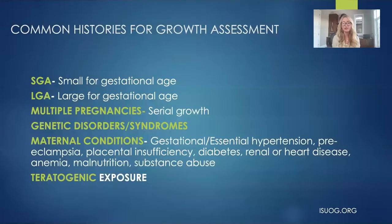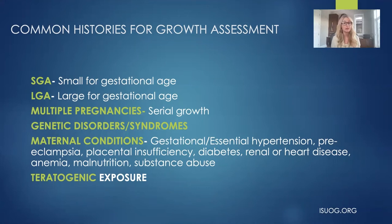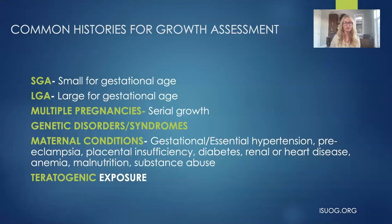Here are some of the more common histories we'll see in patients referred for an obstetrical scan: query SGA, LGA, different types of multiple pregnancies for serial growth assessments, different genetic disorders and syndromes, and different maternal conditions such as gestational or essential hypertension, pre-eclampsia, placental insufficiency, diabetes, renal or heart disease, anemia, malnutrition, substance abuse, and teratogenic exposures. As you can see, there are quite a few scenarios where we'll be required to perform these growth assessments.